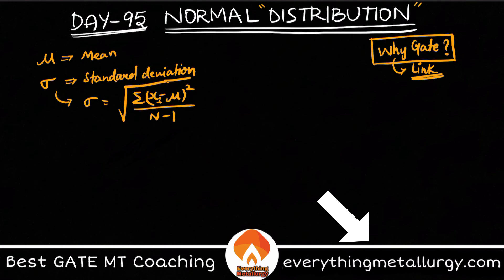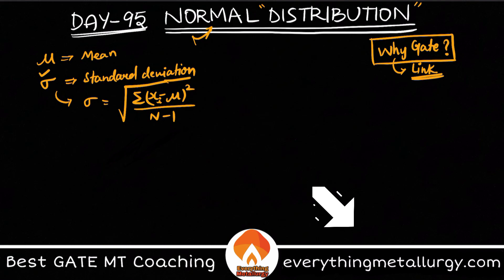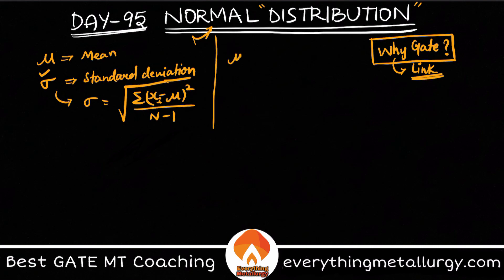You can take sigma as tolerances, and these tolerances are explained by the normal distribution. Let's say you have data that is 100% — that's the total data. If these values follow a normal distribution, we divide the data into three intervals: mu ± sigma, mu ± 2 sigma, and mu ± 3 sigma.